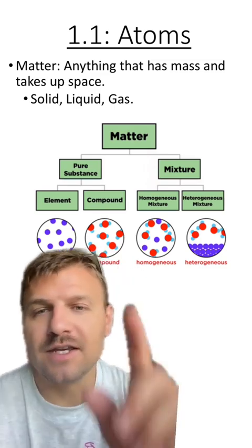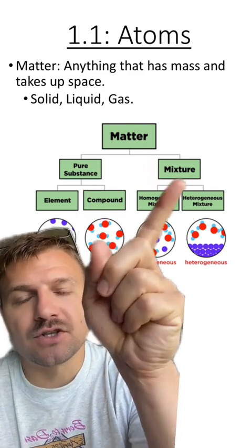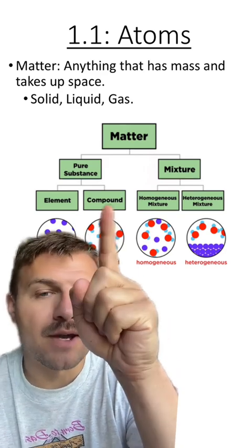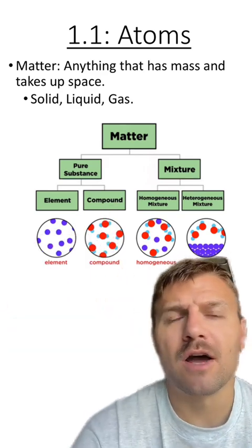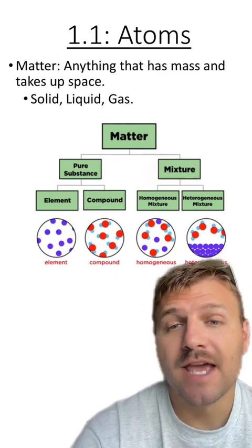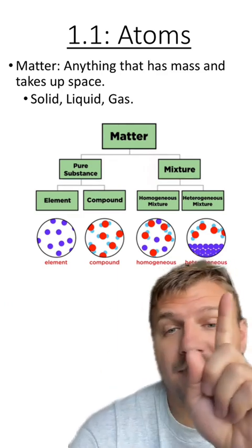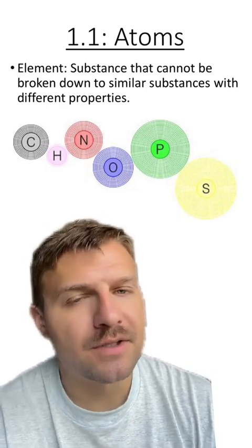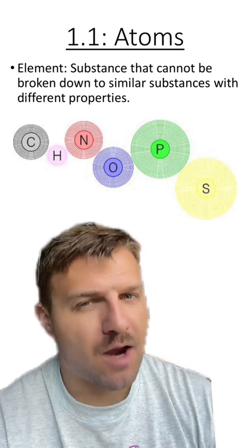I like to review the concepts of pure substances and mixtures in my class. Pure substances are like a single element or a single compound, while mixtures are combinations of these elements and compounds, and there's two different types. You have homogeneous and heterogeneous. An element is a substance that cannot be broken down into a simpler substance without changing its property.